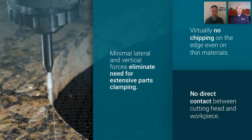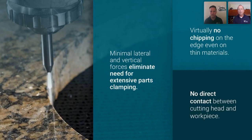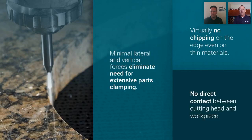What are the benefits of water jet cutting versus other processes? First, there is very little lateral force on the part — only a pound or two of lateral force — so we can eliminate the need for any elaborate or expensive fixturing. The stone is typically just set on the table. Second, there is virtually no chipping on the edge, even on thin materials. That first video showed a piece of Dekton, and the edge is ready to be glued right after cutting, eliminating chipping that can occur with a saw.